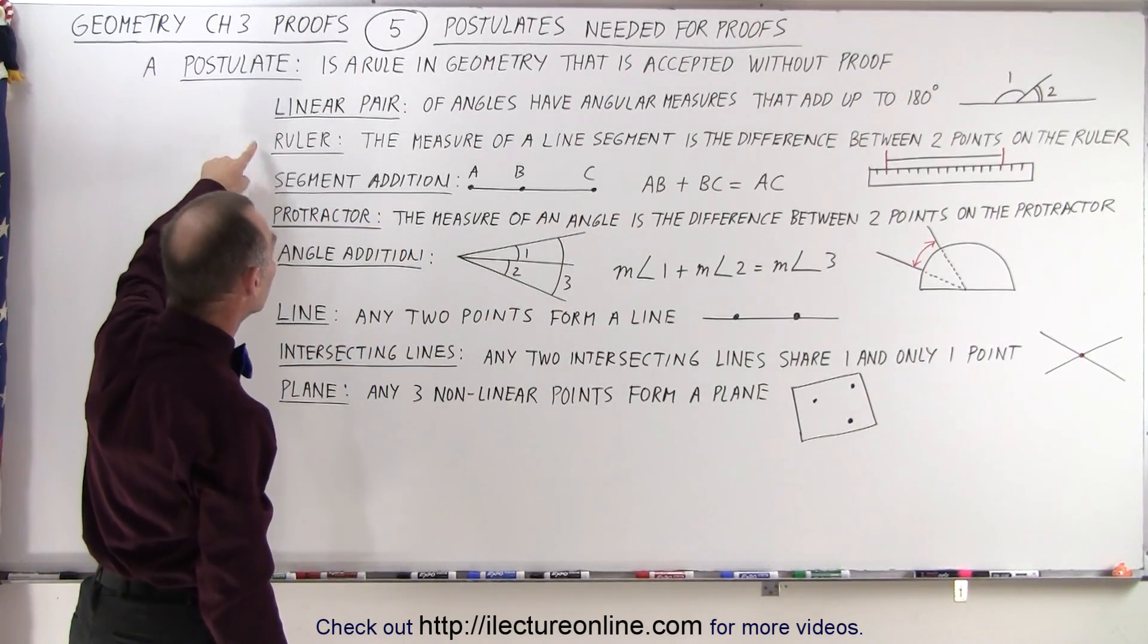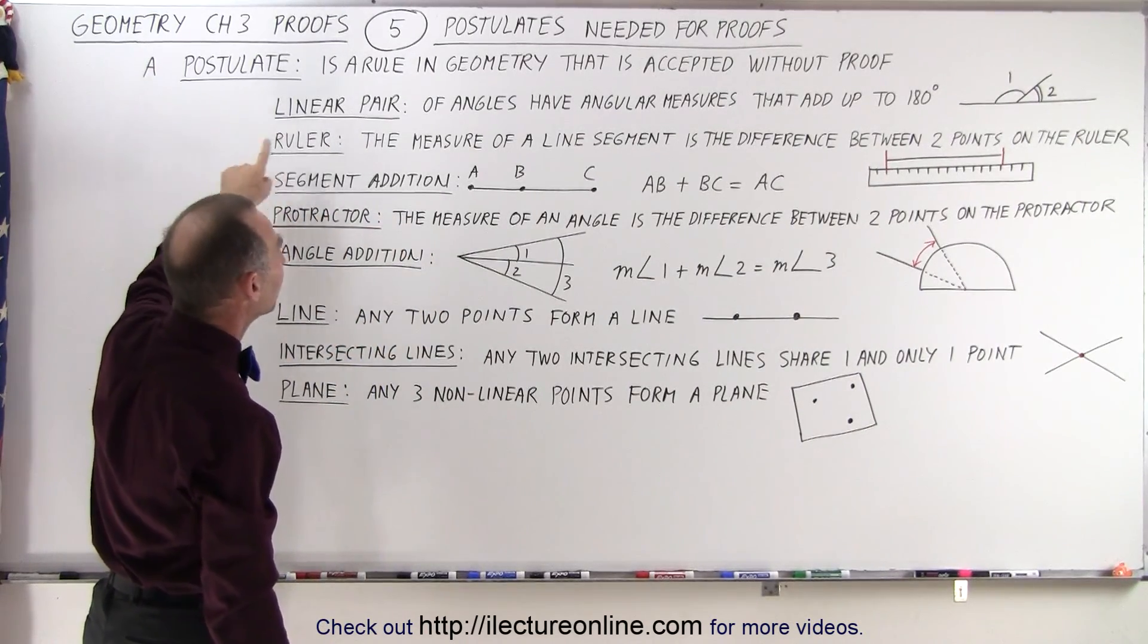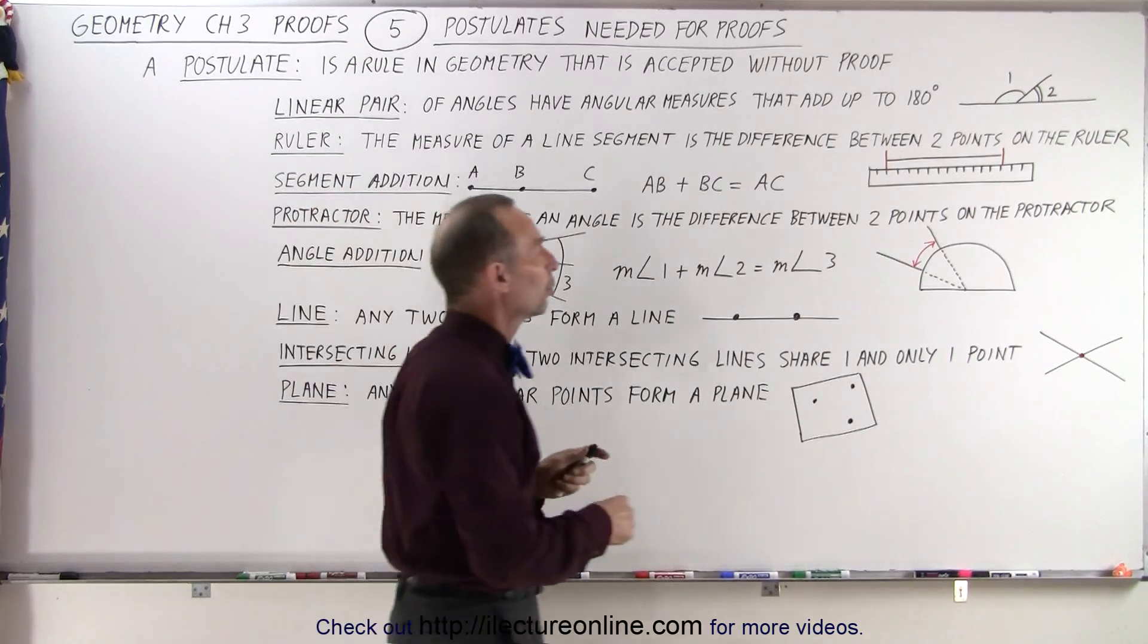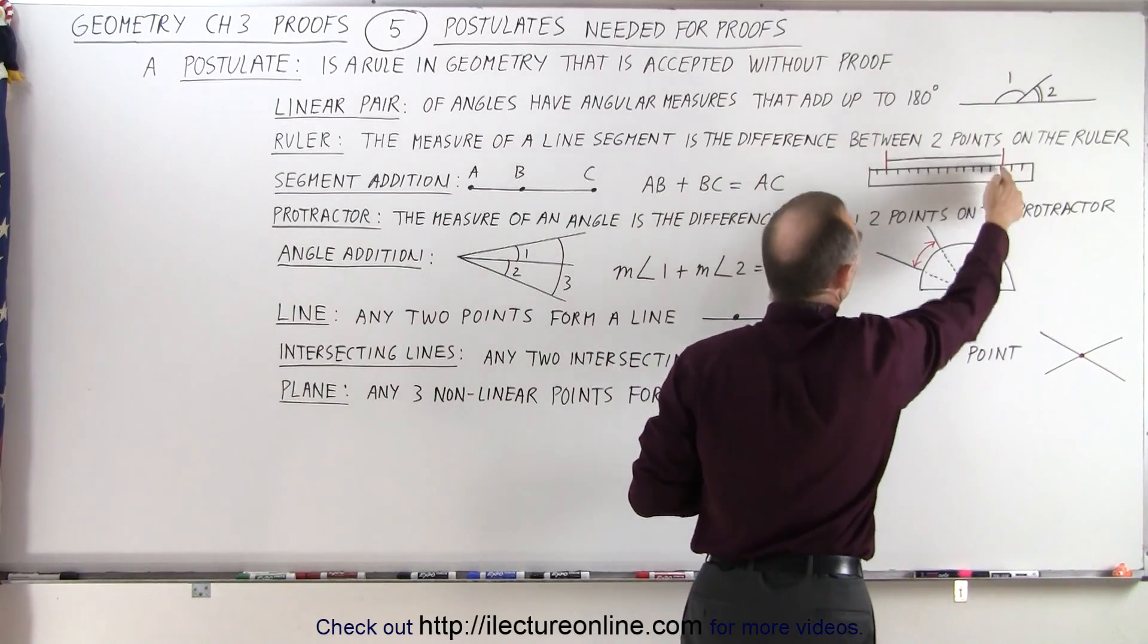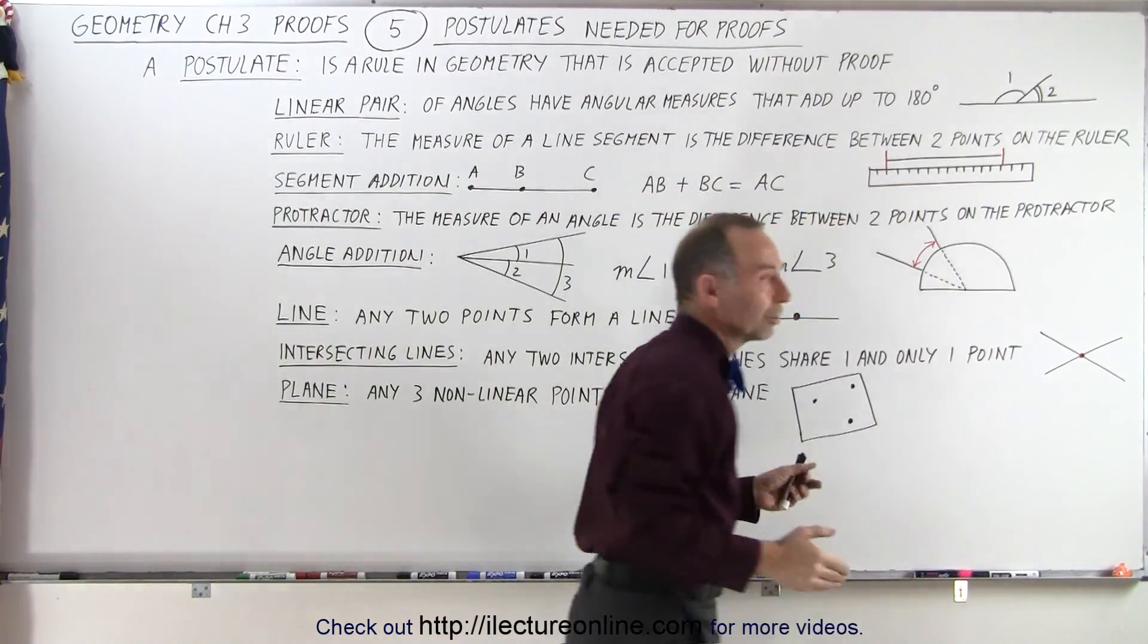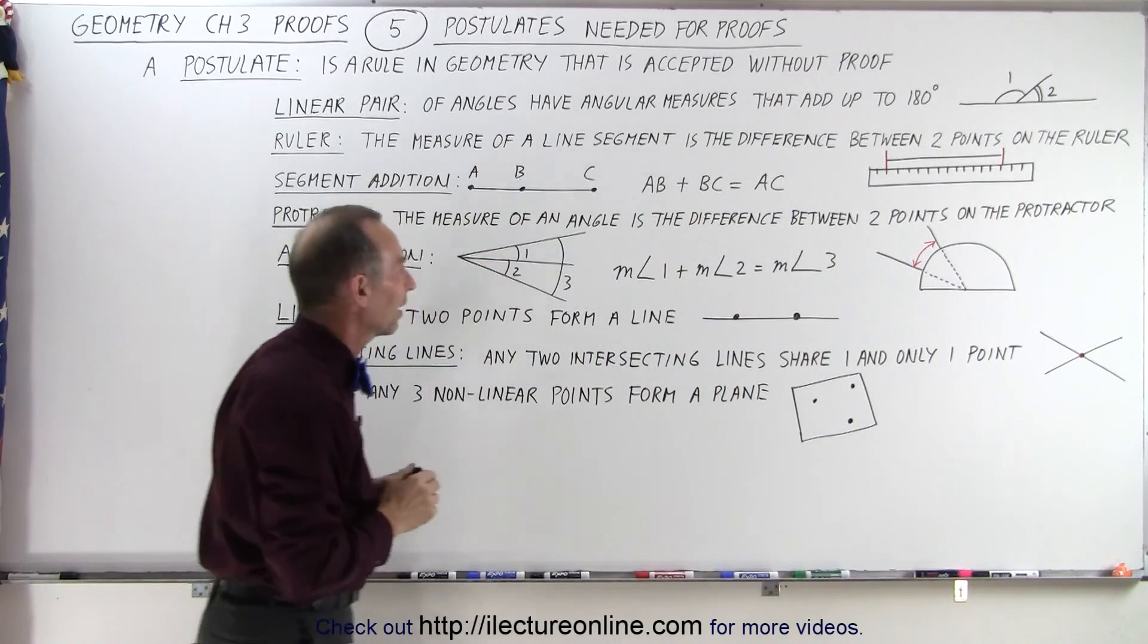A ruler, the ruler postulate, says that the measure of a line segment is the difference between two points on the ruler. Here's the beginning of the line segment, the end of the line segment, you take these two points on the ruler, you subtract one from the other, the difference is the length of that line.